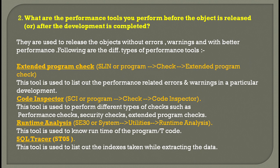What are the different performance tools that we perform before an object is released or after development is completed? Whenever you are about to release an object, we generally perform some performance checks to ensure the object is going without any errors or warnings, or to sort out any performance issues. The first tool is Extended Program Check, which is SLIM — you can go to the program and select 'Check Extended Program Check'. This tool is used to list out performance-related errors and warnings in a particular development.